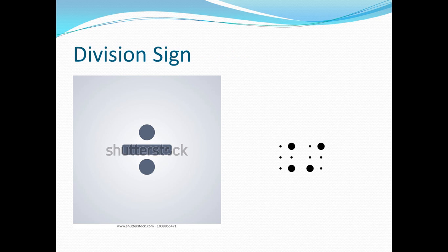Similarly, the division sign can also be displayed in different ways in both print and braille. For this video, I'm just going to feature the divided by sign, and in Nemeth this is also a two-cell character. The first cell should have dots 4 and 6, and the second cell dots 3 and 4.